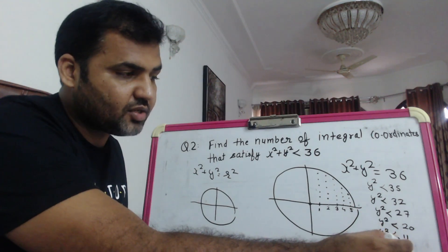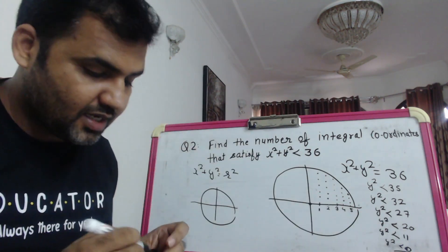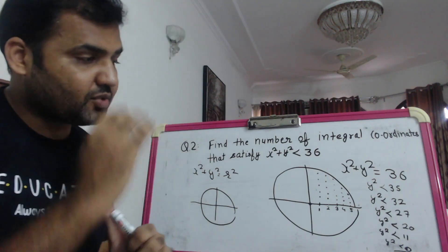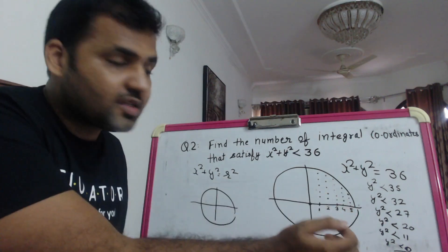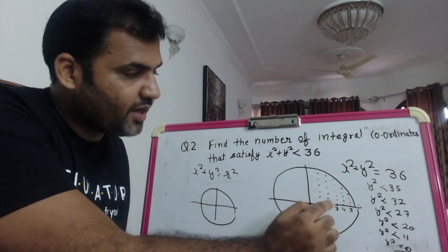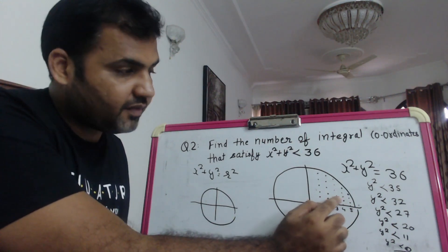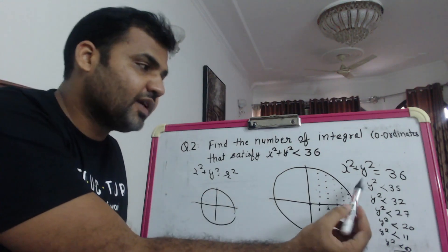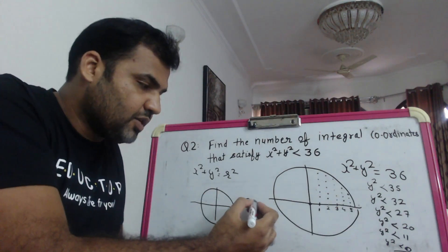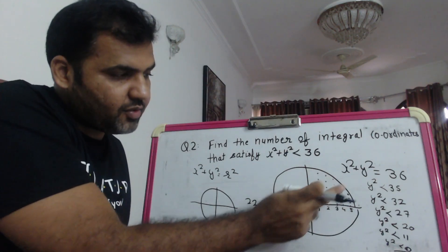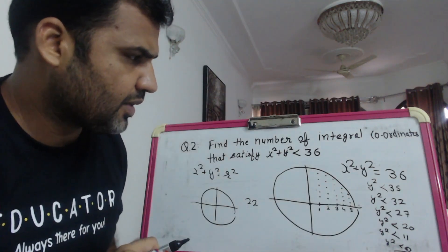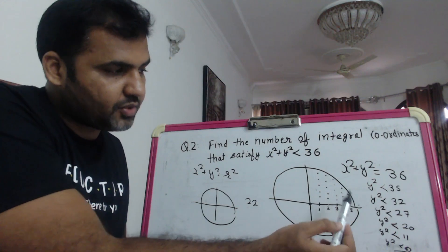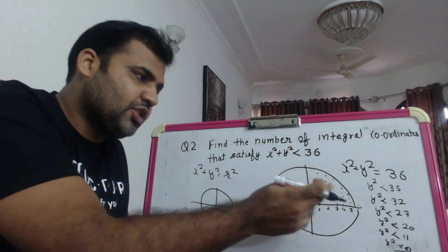So in the first quadrant, the count is: for x=1: 5 points, x=2: 5 points, x=3: 5 points, x=4: 4 points, x=5: 3 points. That gives 5 + 5 + 5 + 4 + 3 = 22 solutions in the first quadrant.